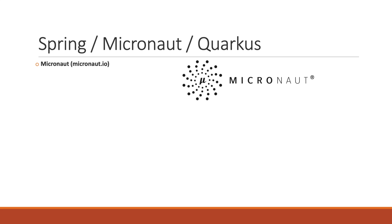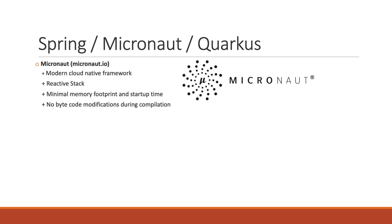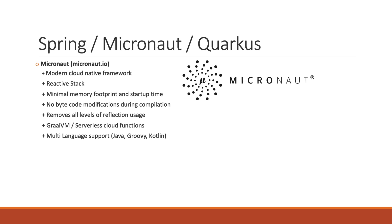And now we have Micronaut. Micronaut is a modern cloud native framework which supports building a reactive stack. By using ahead-of-time compilation it achieves a minimal memory footprint and low startup times, so the first points are actually similar to Quarkus. What makes Micronaut unique is that it does not modify bytecode during compilation time and it removes all levels of reflection. With that, the maximum speed can be achieved during runtime. GraalVM and serverless functions are supported well due to the use of ahead-of-time compilation. Multiple languages are supported, which are Java, Groovy, and Kotlin.